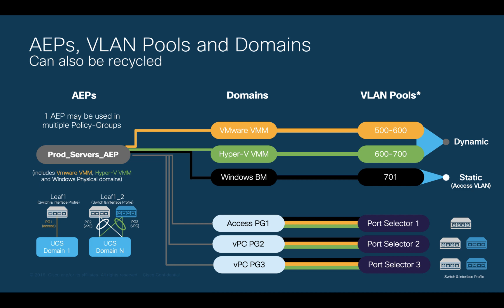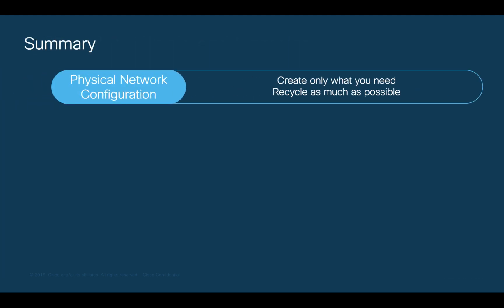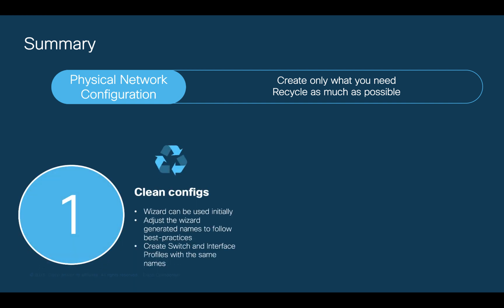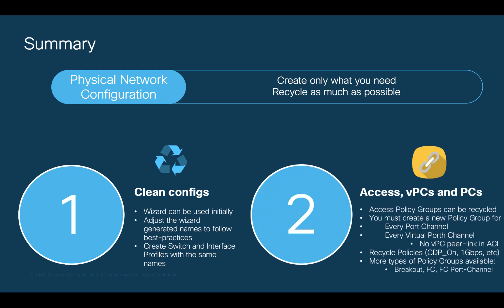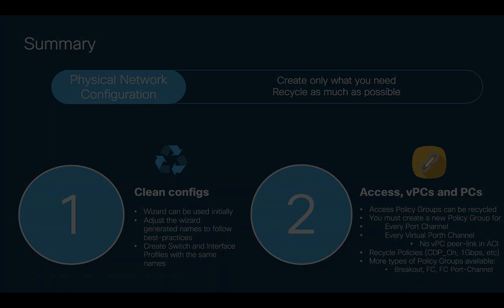This translates into less time invested and less potential errors due to configuration inconsistencies. As a summary, we always want to create only what we need and recycle objects to simplify our operations as much as possible. Always remember to create new policy groups for each VPC and port channel connection, and you should be fine. ACI provides you with a better, simpler, and secure network — any size, anywhere, and on any cloud.